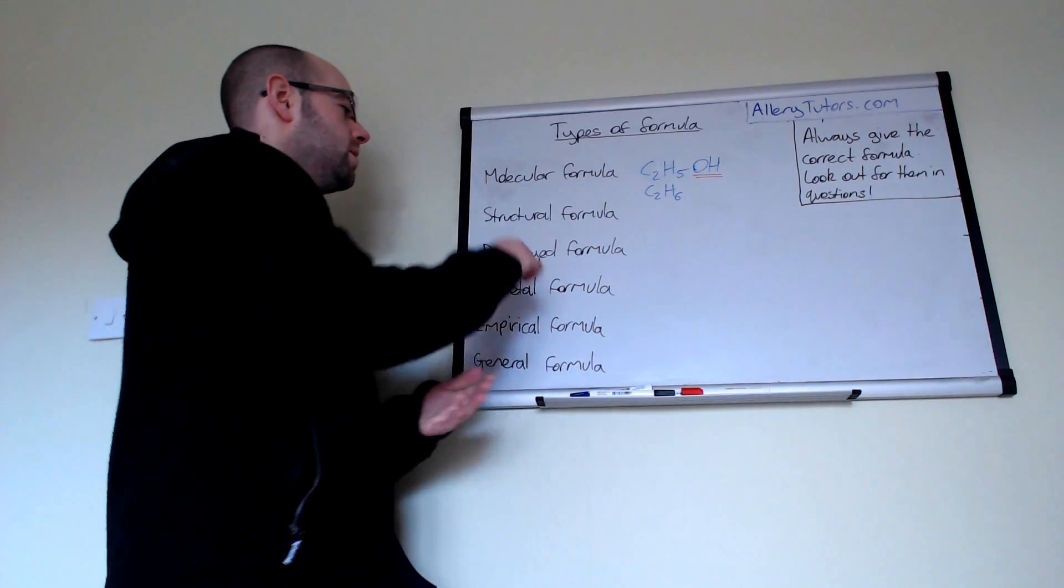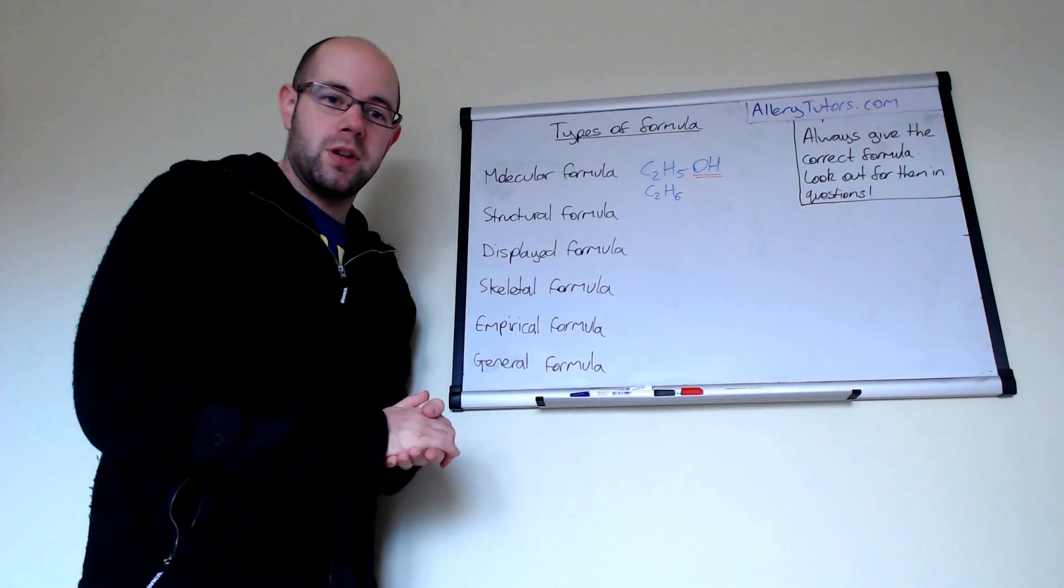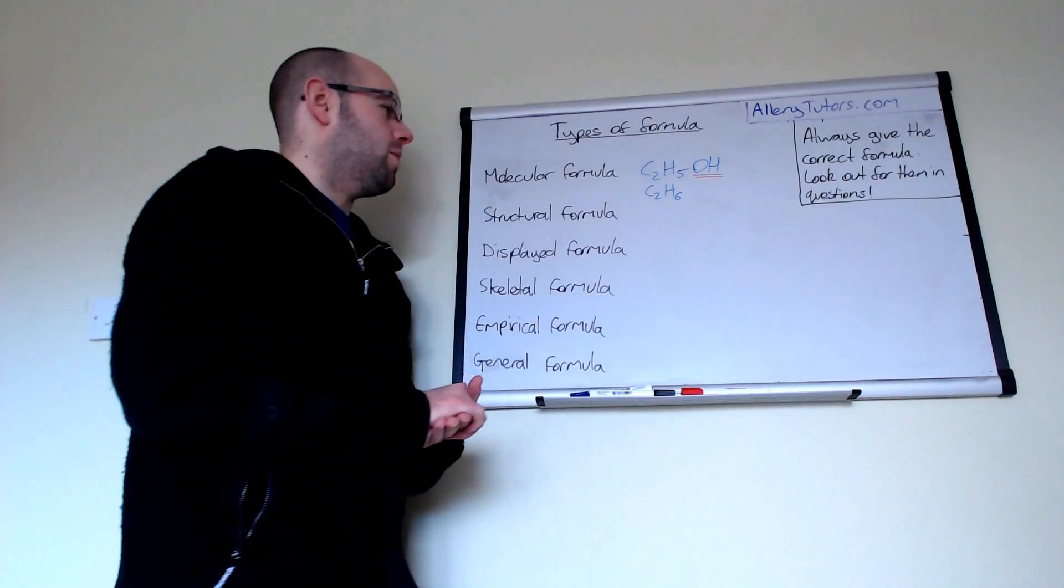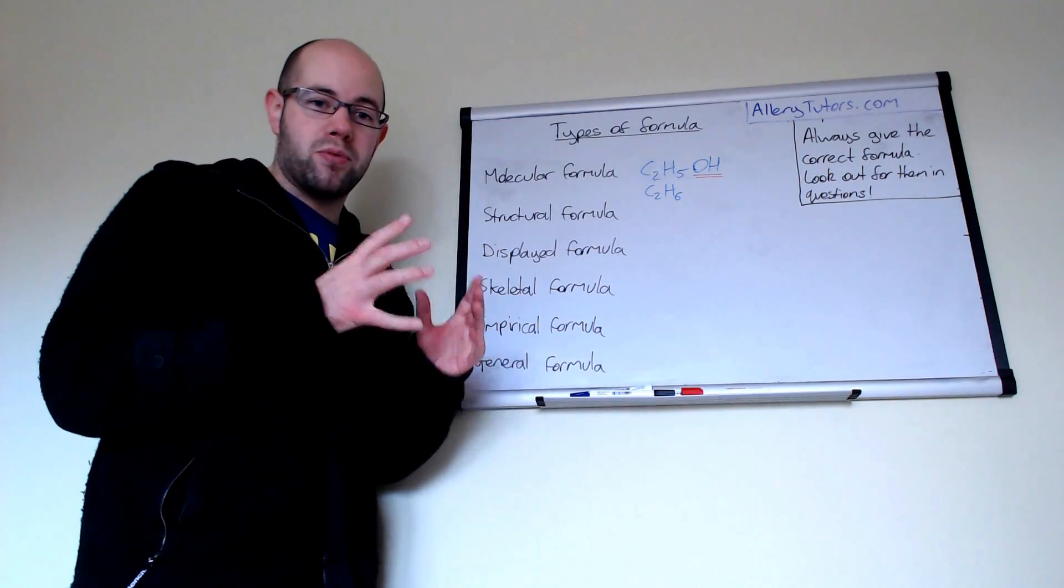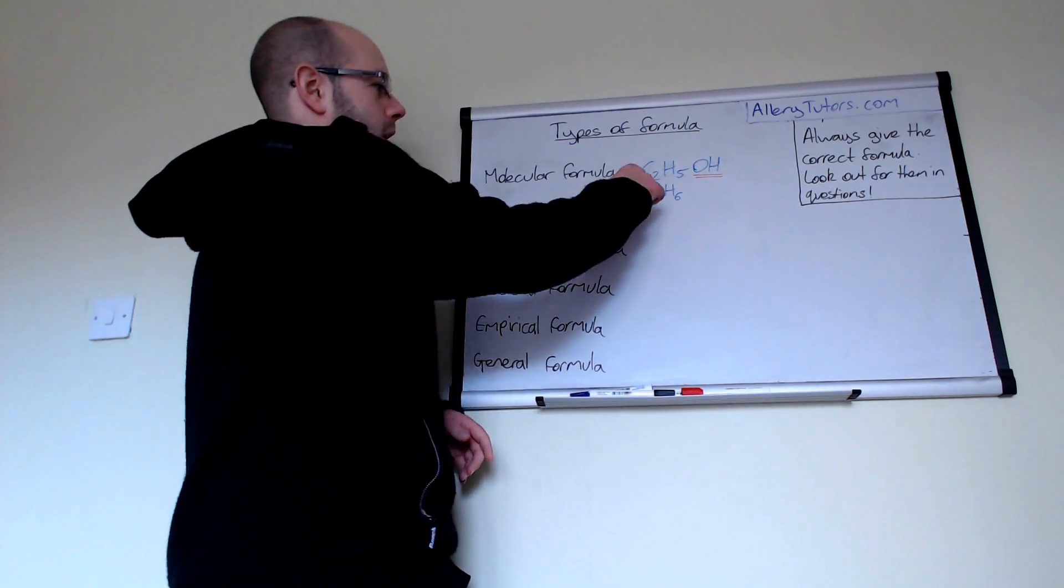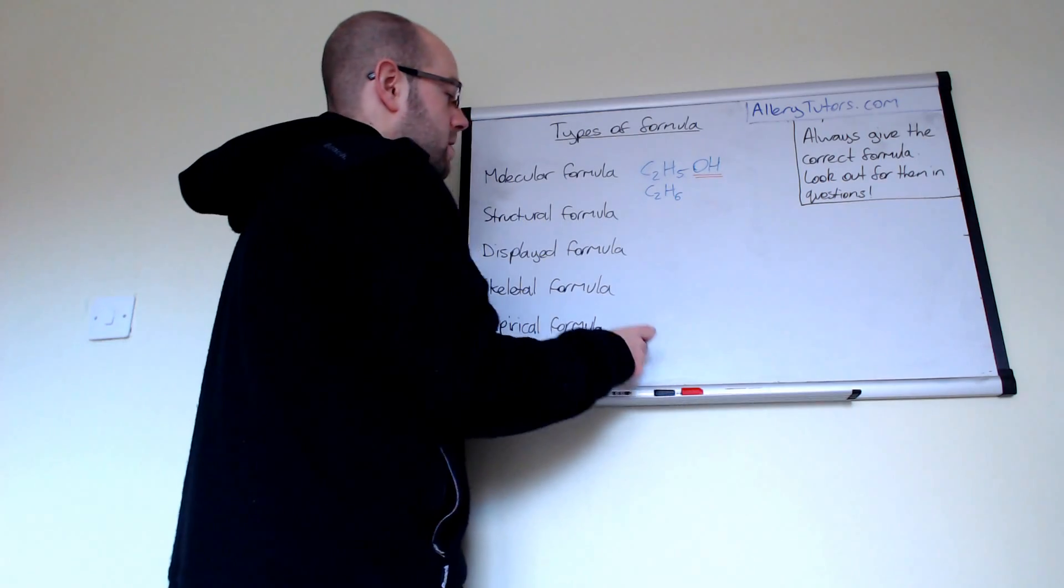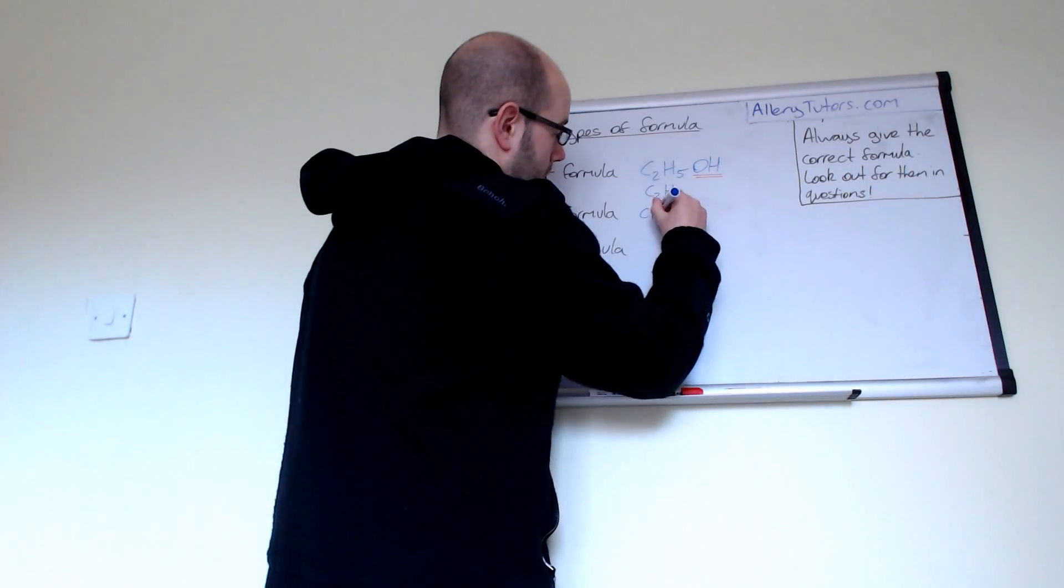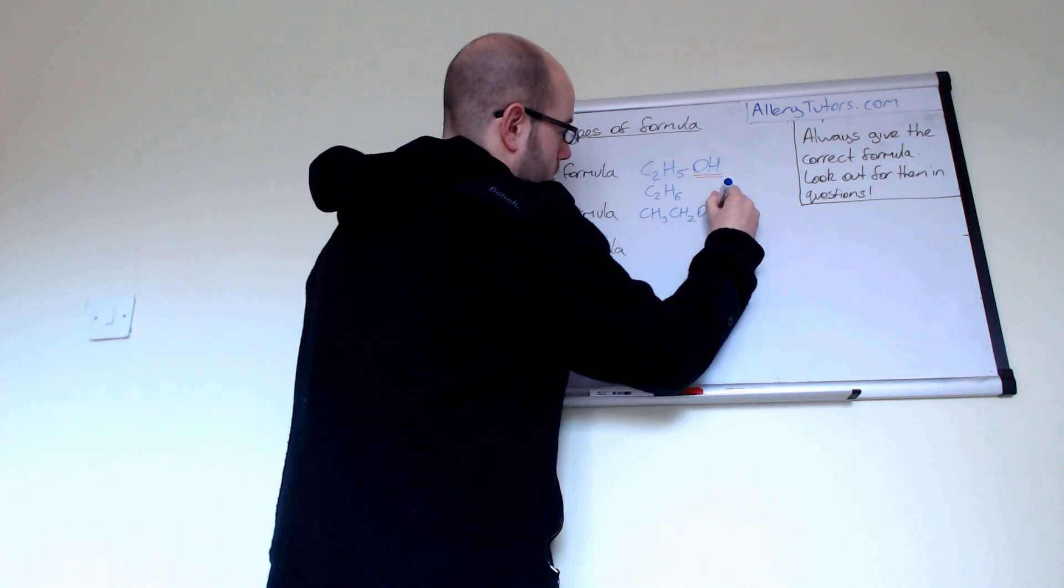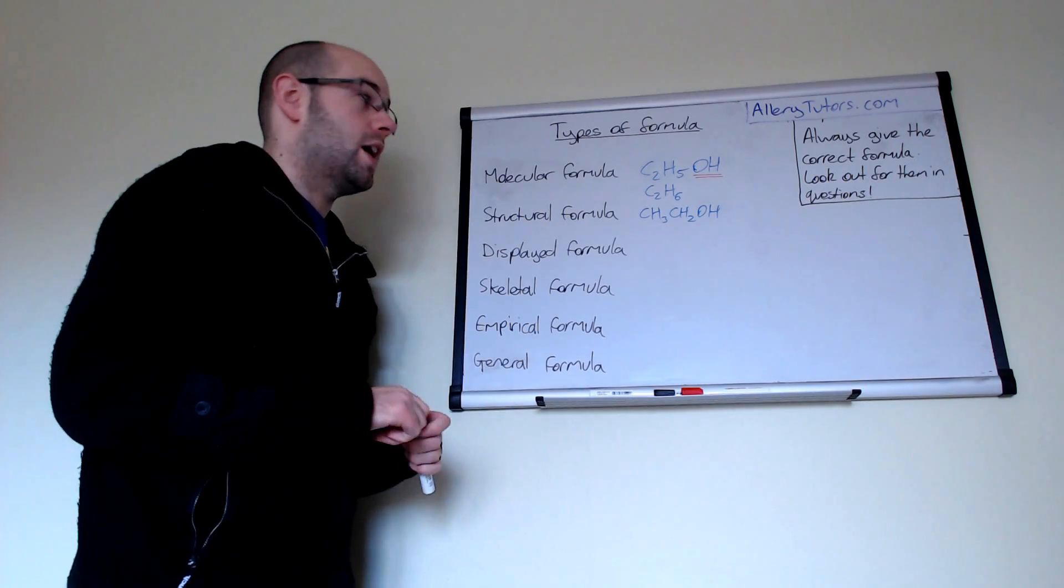If we look at the next one which is the structural formula, the structural formula shows you the basic structure of your molecule. It follows very similar from the molecular formula except we're breaking up our molecule into carbon chunks, so for example if we have ethanol we can write that as a structural formula like CH3CH2OH.